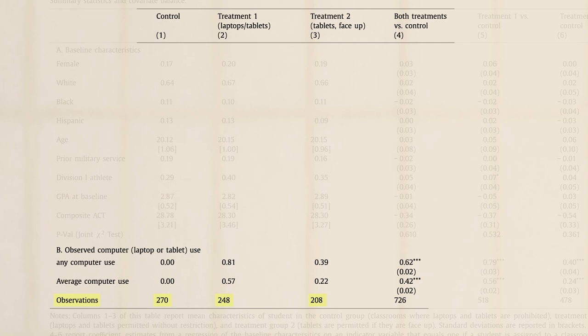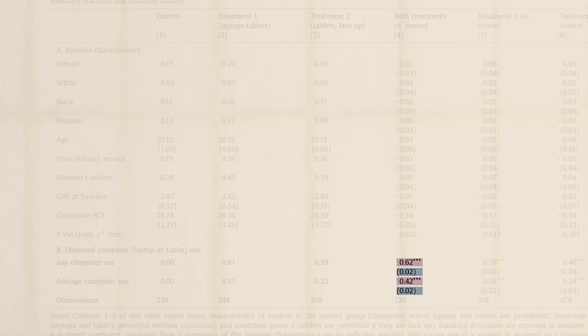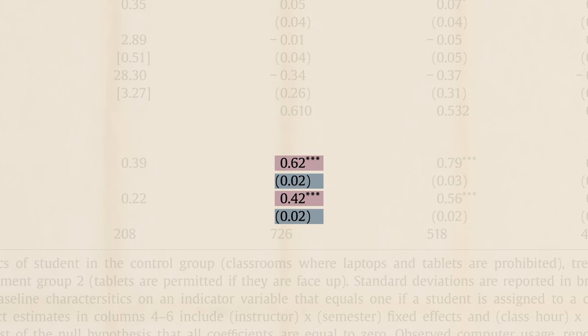We also get to see the sample size in each group. The stars are just, like, decoration? Some academic papers use stars to indicate differences that are statistically significant. This makes them jump out at you.